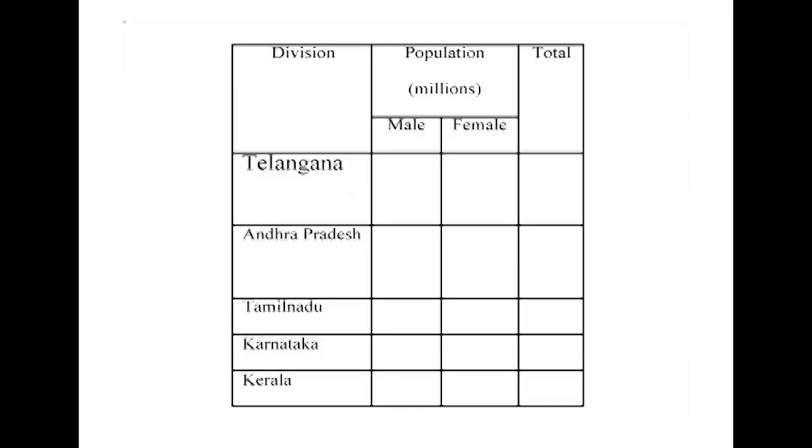Two-way tables give information regarding two mutually dependent questions. For example, a one-way table answers how many millions of persons are in each division. But if you want to know who is in the majority — male or female — a two-way table answers this by providing columns for female and male. The example two-way table lists divisions like Telangana, Andhra Pradesh, Tamil Nadu, Karnataka, and Kerala, with population in millions divided into male population and female population, and a total column.